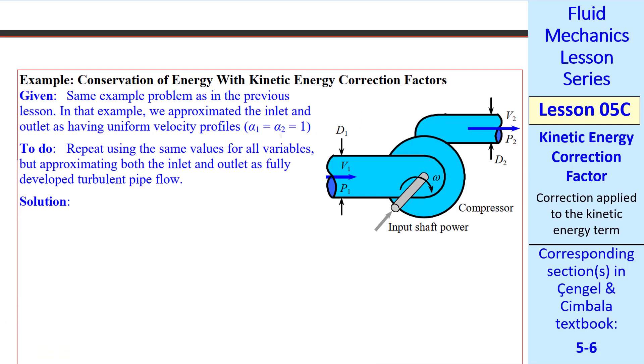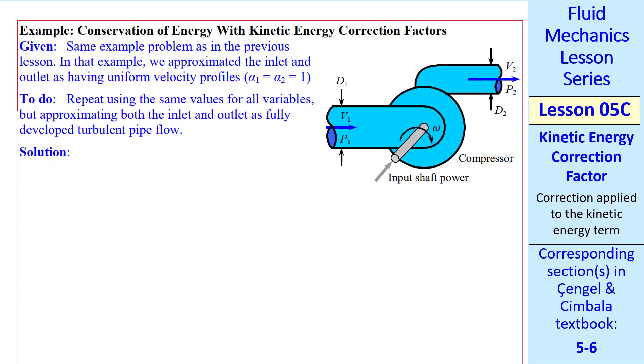Let's do another example problem. I'll repeat the exact same problem we did last lesson, where essentially we assume that α₁ and α₂ were 1, since we didn't even know what α was yet. Now let's repeat using all the same values, but we'll approximate both the inlet and the outlet as fully developed turbulent pipe flow. So we'll set α₁ and α₂ to 1.05, and we'll replace v² over 2 with αv² over 2 at both the inlet and the outlet.